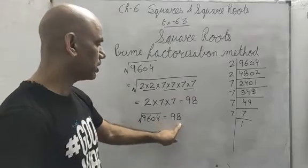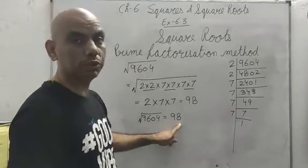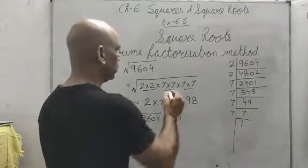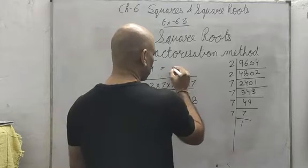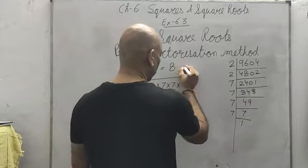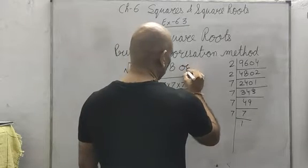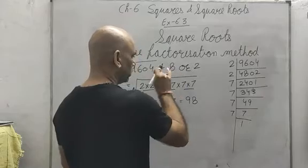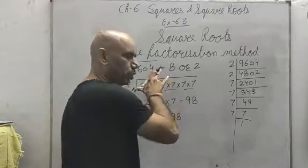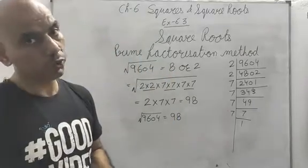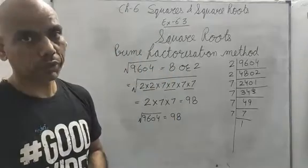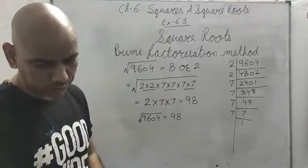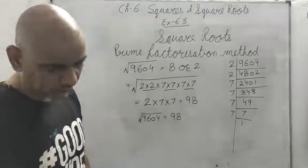For the unit place: 8² = 64 and 2² = 4. Both end in 4, so the unit place of the square root could be 8 or 2. And since 98 ends in 8, that confirms it. This is the prime factorization method. Let us move to the exercise now — Exercise 6.3.